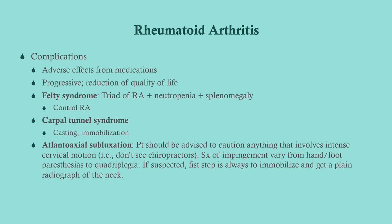Complications often arise from medication adverse effects, but RA is progressive and can still advance even with treatment. Felty syndrome is a triad of RA, neutropenia, and splenomegaly — usually a sign of poorly controlled RA; treatment is to control the RA. Carpal tunnel syndrome can result from joint erosion and is managed with casting and immobilization. Atlantoaxial subluxation is serious and potentially fatal — it is classically triggered when an RA patient visits a chiropractor; these patients can become paralyzed.